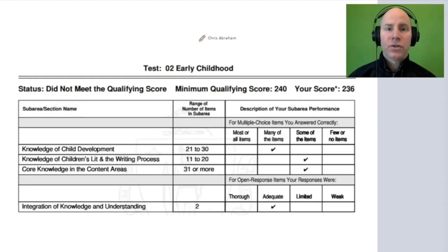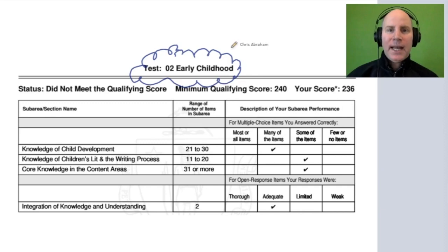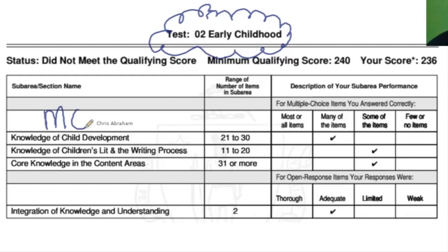Let's look at the early childhood score report. I want you to understand how to interpret it. For example, the test itself is broken into two sections: multiple choice, where there are 100 questions, and an open response section, an essay section, where there are two questions.